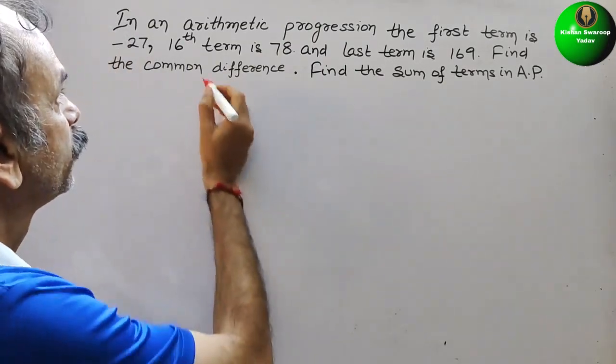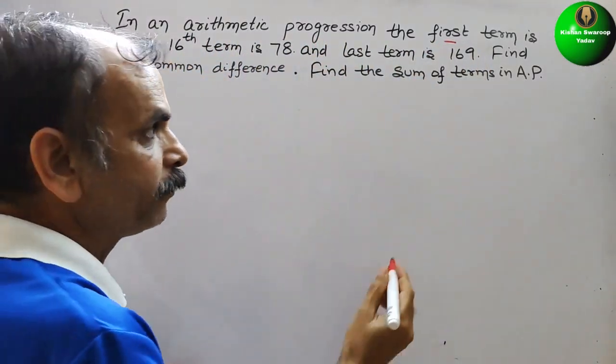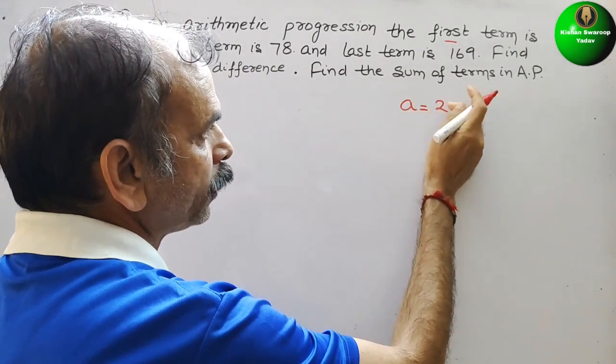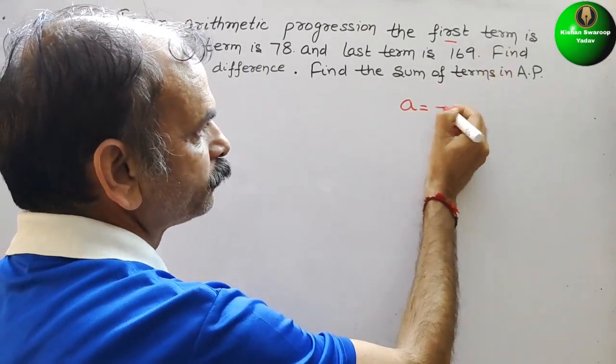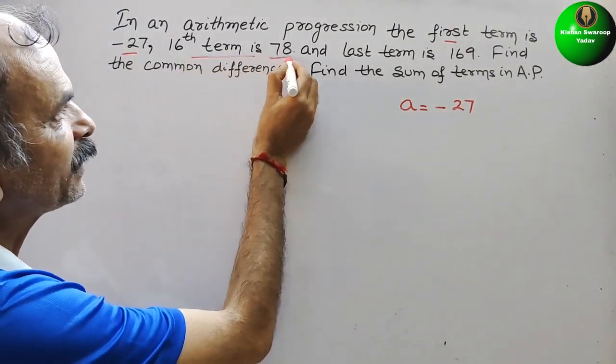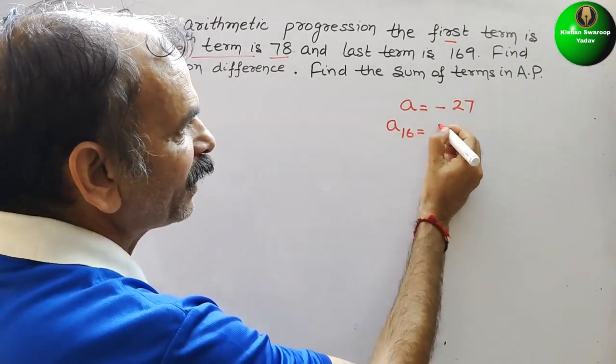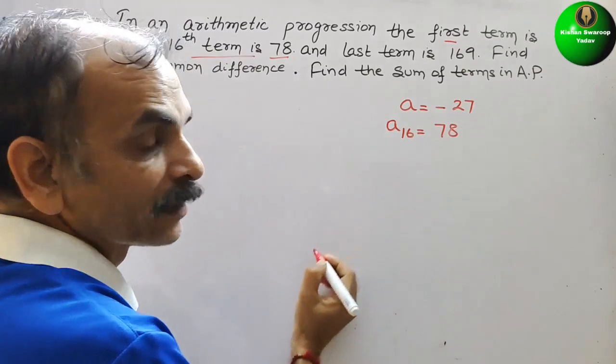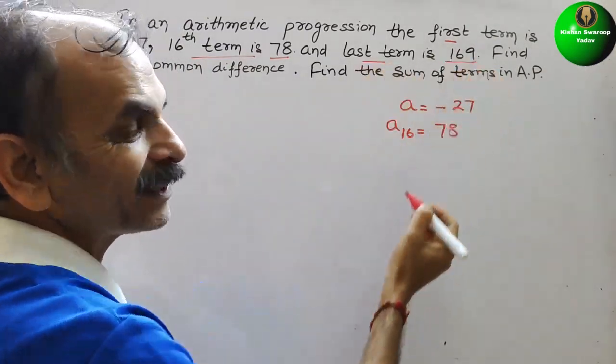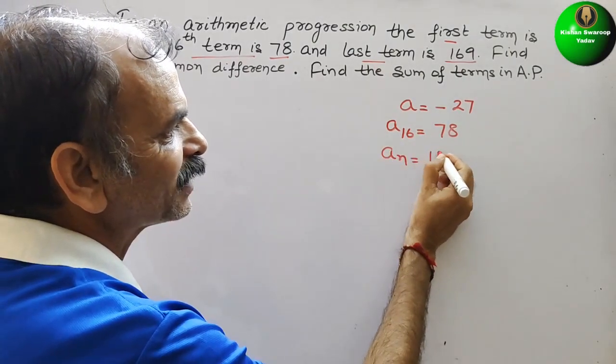To understand this, what they have told: AP, the first term is minus 27, that means A equals minus 27. Next, 16th term is 78, so we can say A₁₆ is 78. Third, last term is 169, that means AN is 169.